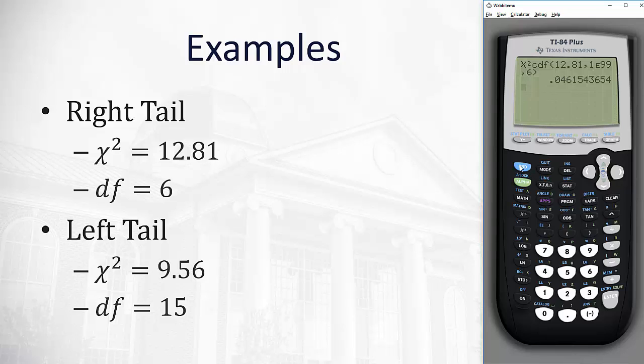Similar to before, hit Second, Vars to get Distributions, and scroll down to select the Chi-squared CDF.